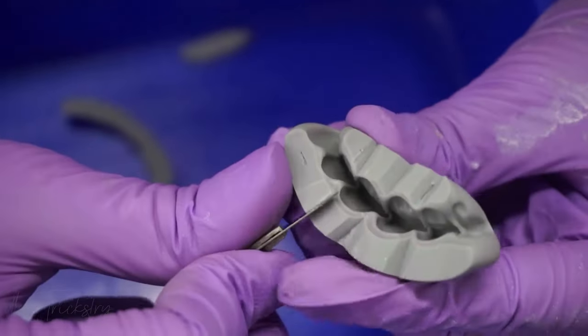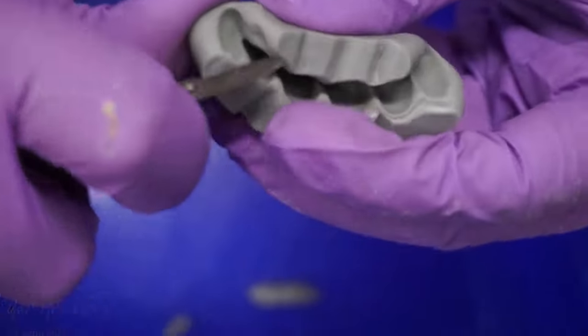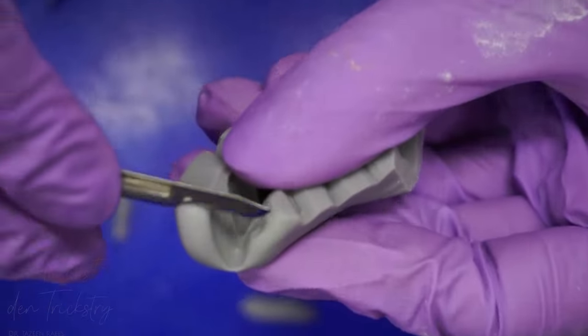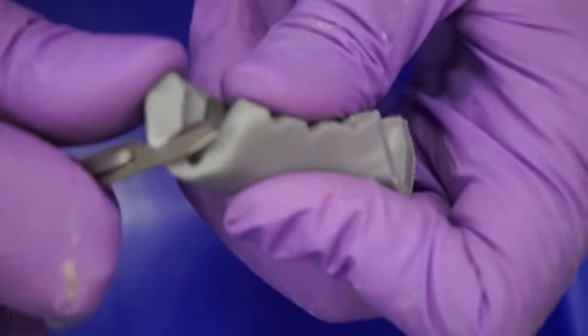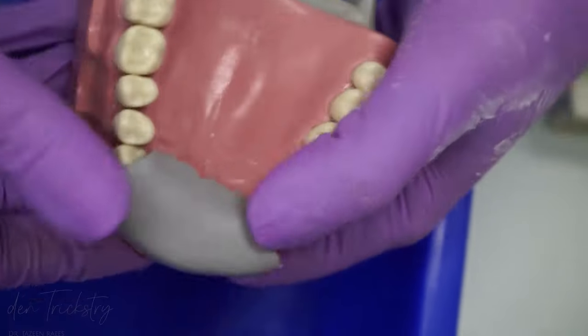One more thing that I like doing is cutting off the blunt ends of the index. This helps us confirm that the index is closely adapted to the teeth. If there is any space in between, you will have to repeat it.